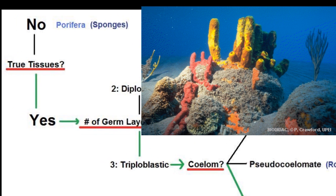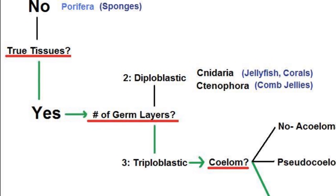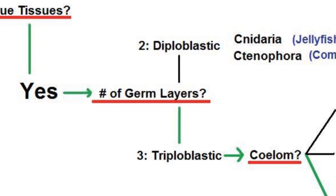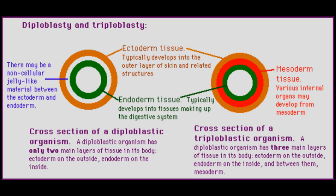The next giant fork in the evolutionary tree of life can be seen in assessing the number of germ layers that an organism has. A germ layer is essentially a type of tissue that is seen during embryological development. More primitive organisms tend to have only two different types of germ layers — endoderm and ectoderm — and these organisms are called diploblastic. Organisms that are diploblastic are, for example, the cnidarians, which are the sea anemones, your corals, jellyfish, things like that, and ctenophores, which are your comb jellies.